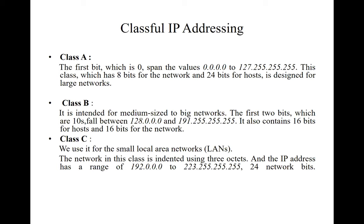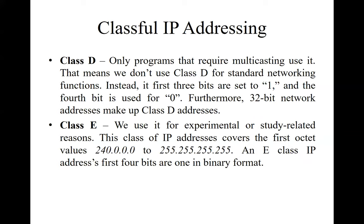Class B starts from 128 to 191. In Class B, two bytes define the Net ID and two bytes define the Host ID. Class C ranges from 192 to 223 — three bytes define the Net ID and one byte defines the Host ID. Class D is used for multicast addresses, and Class E is reserved for experimental or research purposes.